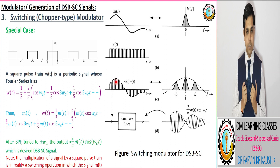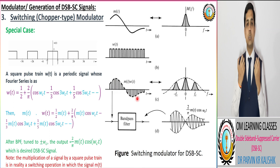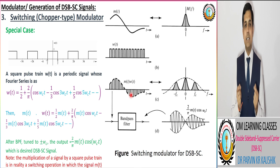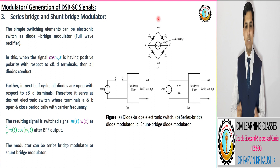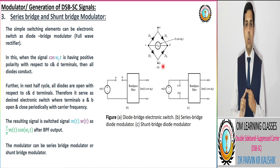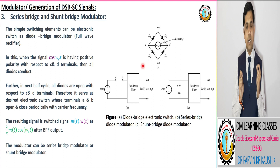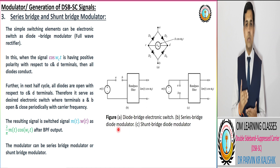In the switching modulator, the circuit corresponds to series bridge or shunt bridge configurations as shown in the figure. This simple switching operation can be done by utilizing a simple switching element, and a simple switching element can be an electronic switch such as a diode bridge modulator, which is a full-wave rectifier. The diode bridge modulator can be categorized according to series bridge as well as shunt bridge modulator.